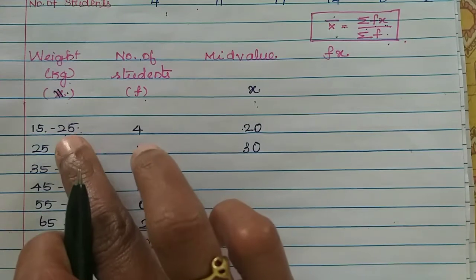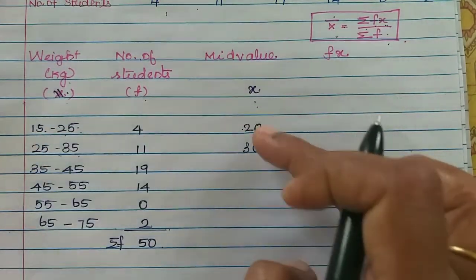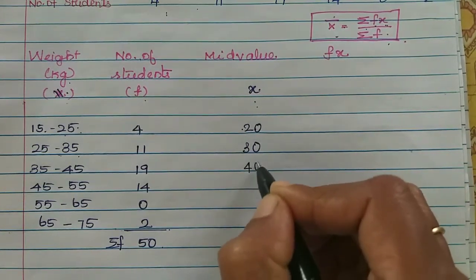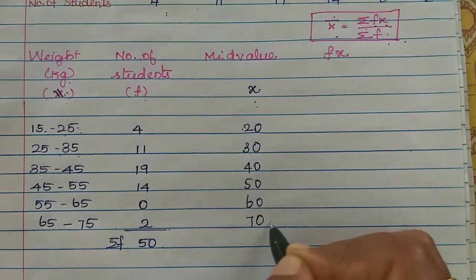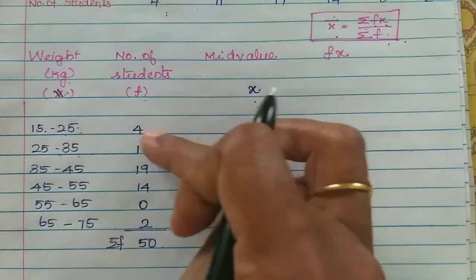The class interval difference is 10. Then here 40, 50, 60, 70. Now x is the x, there is f, then x into f.